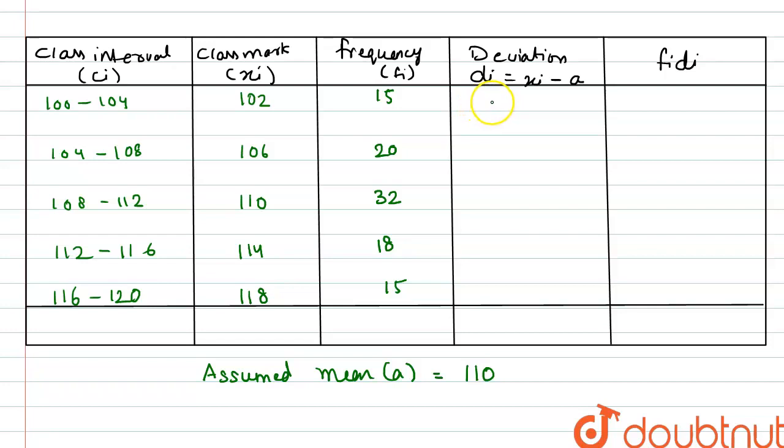We have to find the deviation now, that is xi minus a, which is class mark minus assumed mean. So 102 minus 110 is minus 8, 106 minus 110 is minus 4, this will be 0.